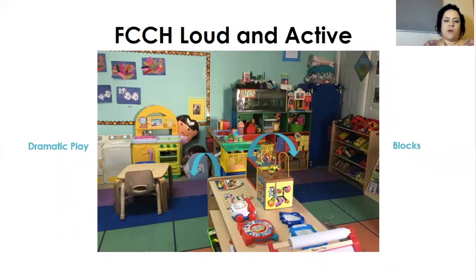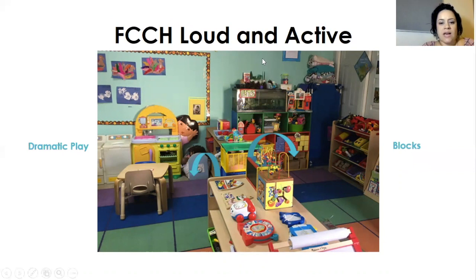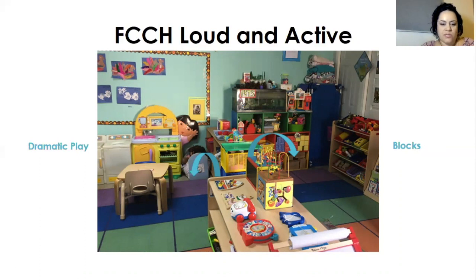Let's think about our smaller spaces. Family child care homes are usually not working with the same amount of space as a traditional preschool classroom, but we can still apply the same concepts. In this small space, we're seeing that the loud and active areas are next to each other — dramatic play and blocks placed near each other. They're using furniture and baskets to divide the spaces. There are clear, defined areas and pathways where children can move in and out. A table is used as a focal point for the dramatic play, and signs on the wall with pictures let the children know what area they're playing in.